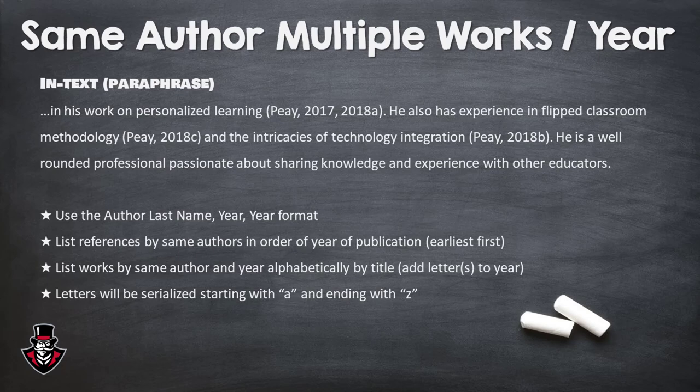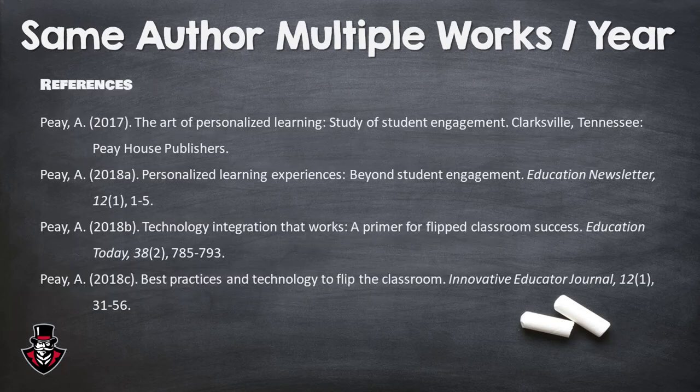Citing the same author from multiple works requires a bit of patience, but it is no more difficult than other APA concepts explored before. Start by thinking of a stairwell and work your way up or down as needed, keeping in mind the basic APA rules of author's last name and date with the added component of serialization. The only difference here is that instead of using numbers, you will be using letters.